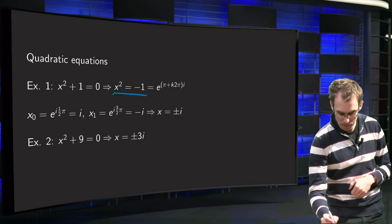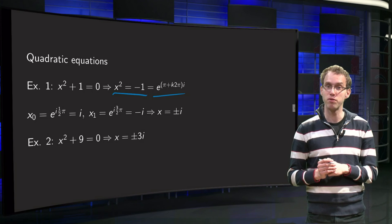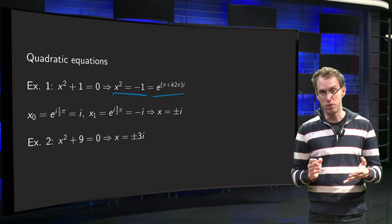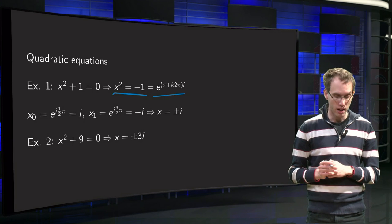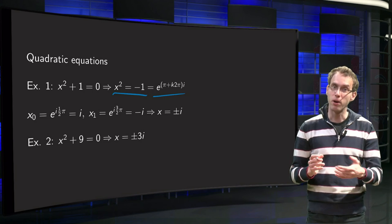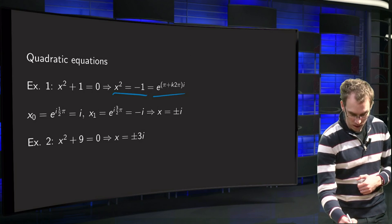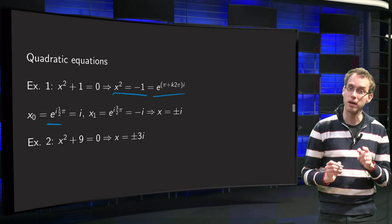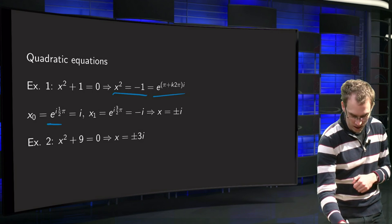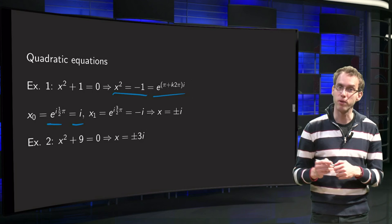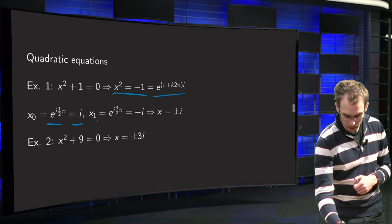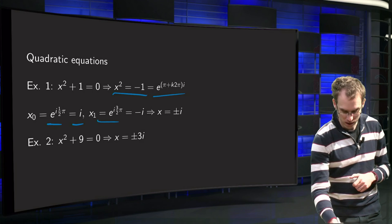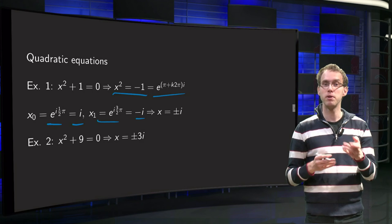So I write minus 1 in polar form: e to the power of pi plus a multiple of 2 pi i, with a norm equal to 1. Then you know how to solve this — you get two solutions: x₀ equals e to the power of i times one-half pi, which equals i, and x₁ for k equals 1 equals e to the power of i times 3 pi over 2, which equals minus i.